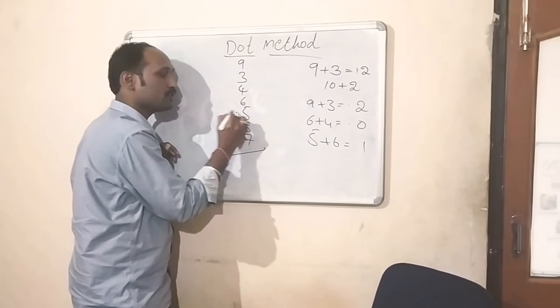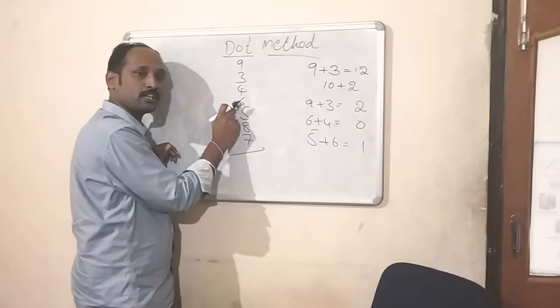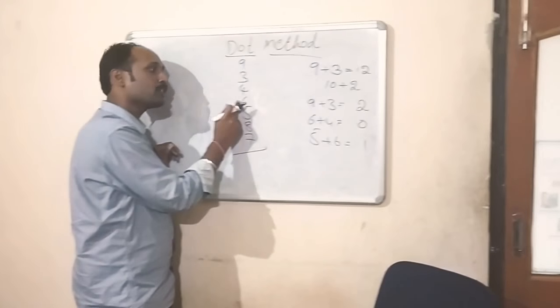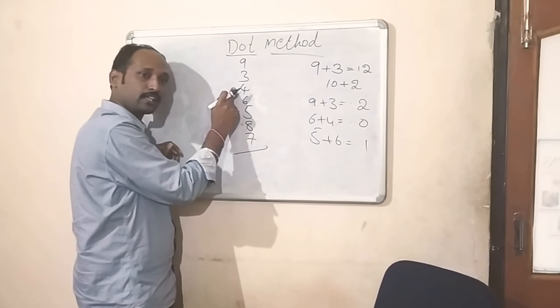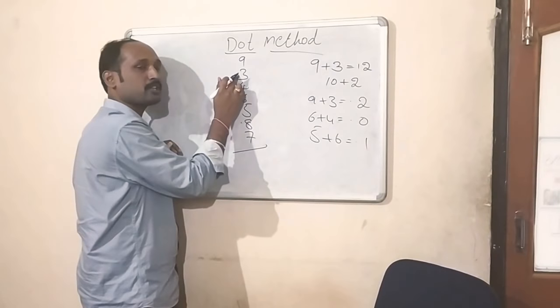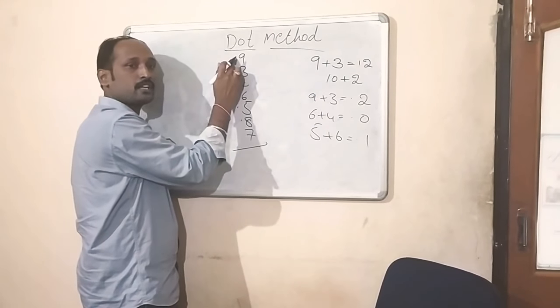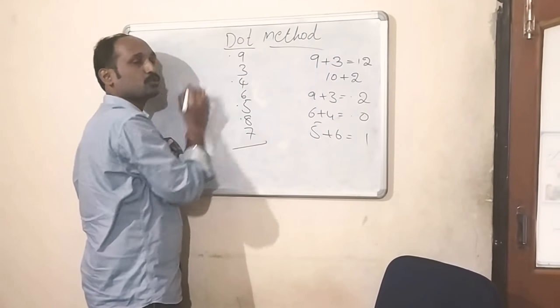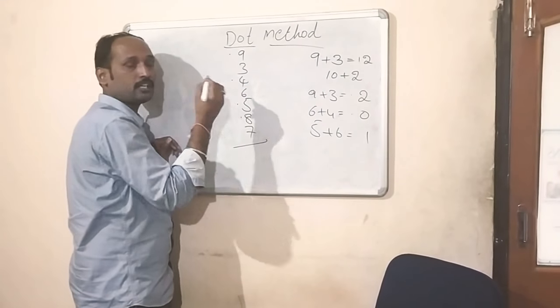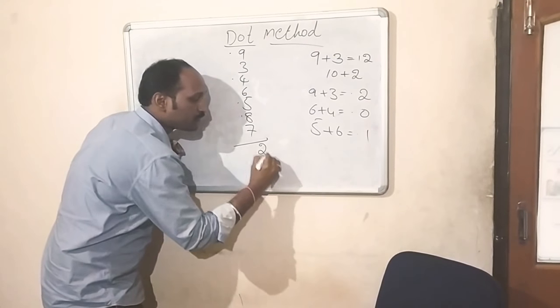10 means dot 0. That 0 we are adding to next number, 0 plus 6 is 6. Then 6 plus 4 is 10, means dot 0. 0 plus 3 is 3. 3 plus 9 is 12. 12 means dot 2. The last remainder you got, write that in units place.